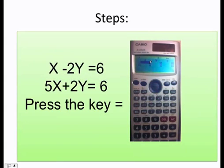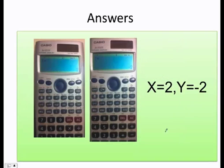As you can see here, you have it, 1, negative 2, 6, 5, 2, and 6. And finally, you press the equal key, and you're going to get your answers. x equals 2 and y equals negative 2.